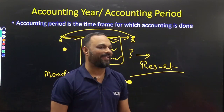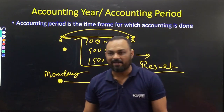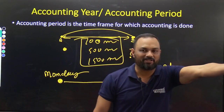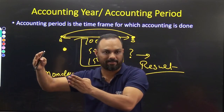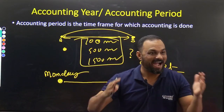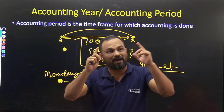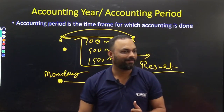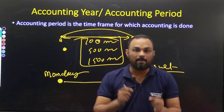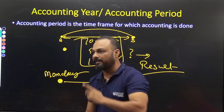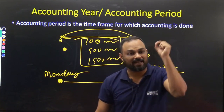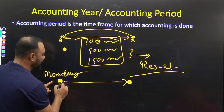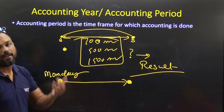You must have gone to school — teachers maintain records of marks for a particular academic year, for example from April to March. That record is kept together for one particular period — that is the academic period. Similarly, in business, accounts are maintained from a particular starting date to a particular ending date, and between those two points we get the end result.